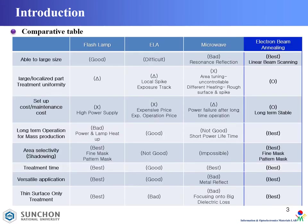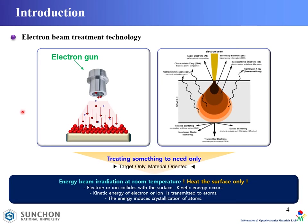This is a comparative table of representative annealing methods. Electron beam irradiation technology is shown in this picture. Electrons are generated from the electron gun and move to the surface of the sample. Electron beam penetration depth is very shallow compared to other energy methods.